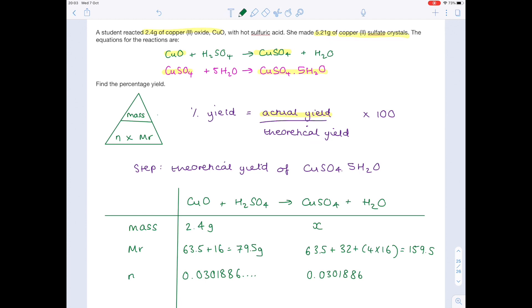And now x, which is the mass—we can see we can work that out by doing number of moles times Mr. So do 159.5 times that 0.0301886 to get your mass of 4.81508, and I'm going to keep that number nice and long again because that is not our final answer.